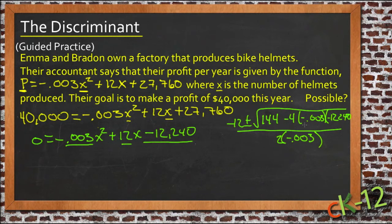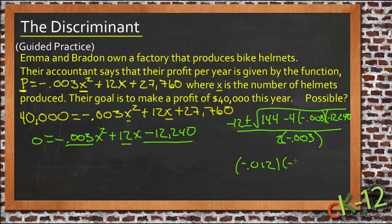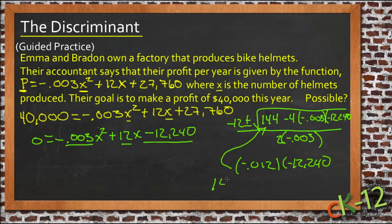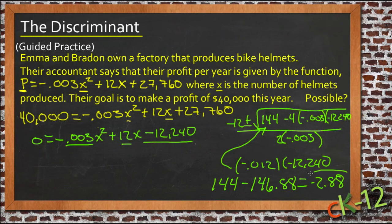Now we start with the discriminant — the stuff under the square root. We have 144 minus 4 times negative 0.003 times negative 12,240. That gives us a negative value under the radical, specifically negative 2.88, which means we would be taking the square root of a negative number.